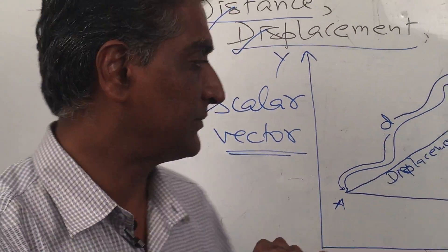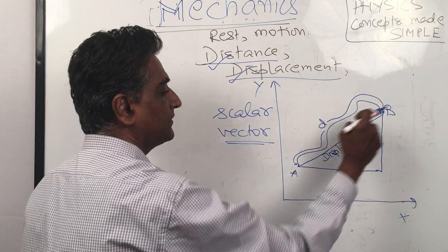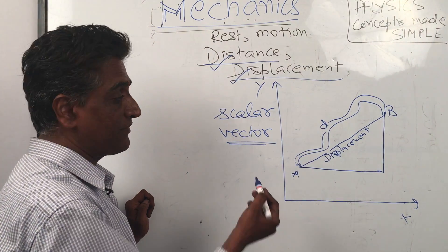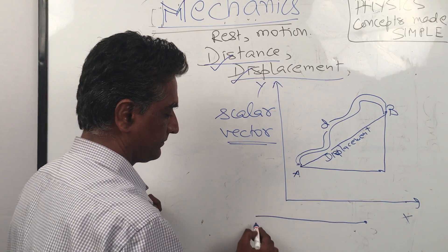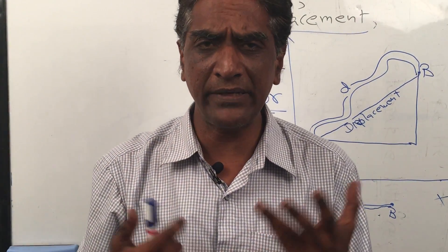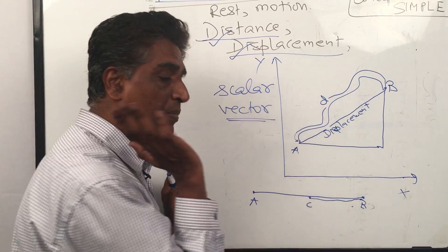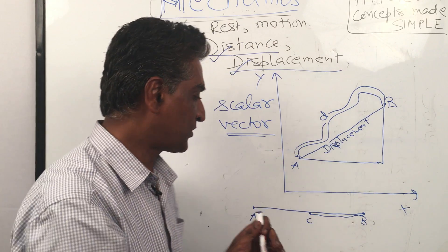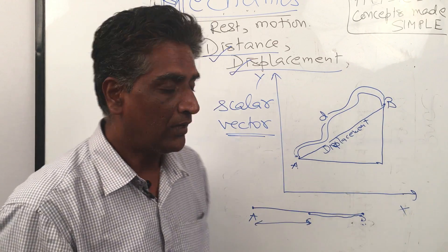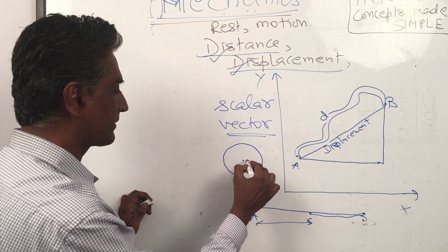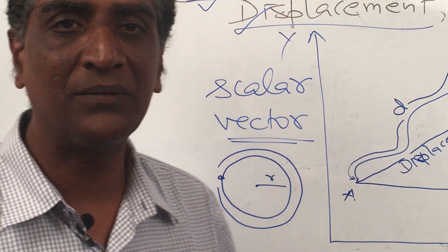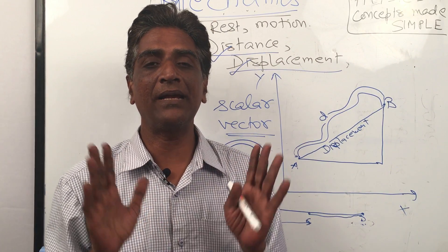Displacement has direction — this way, that way — and that direction is important. Distance is just the total quantity; it is a scalar with no direction. For example, a body goes from A to B and then retraces back to C. The total distance traveled is the whole path, but the displacement is only from the start to C. Another example: a body travels in a complete circle of radius r — the distance is 2πr, but the displacement is zero.